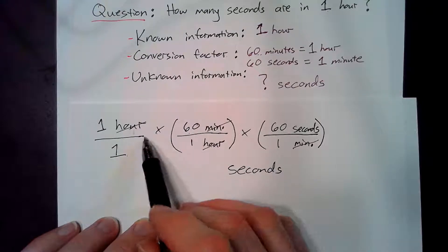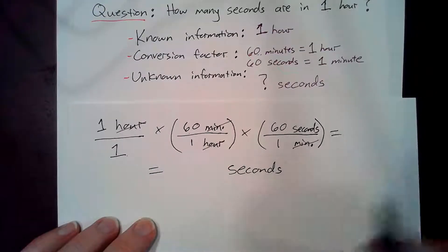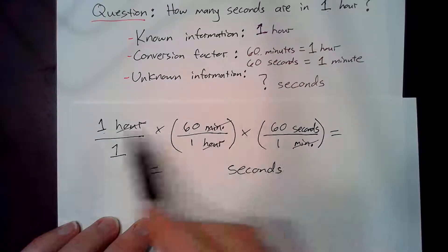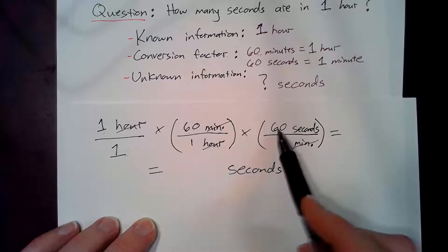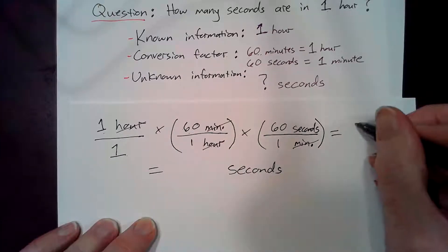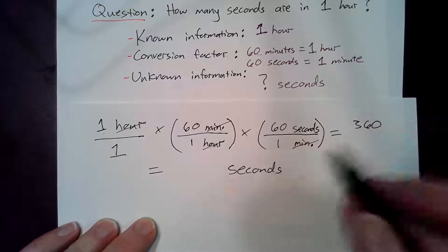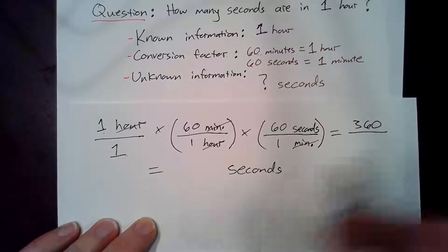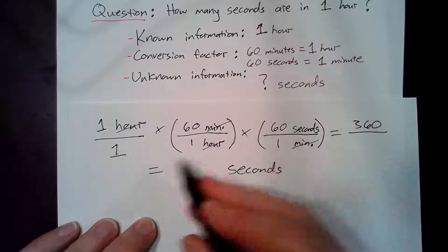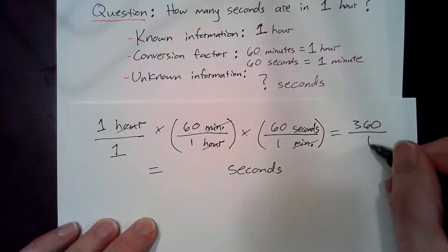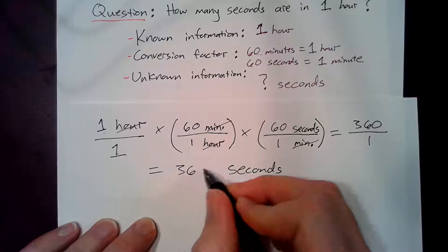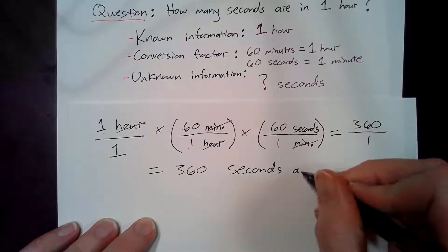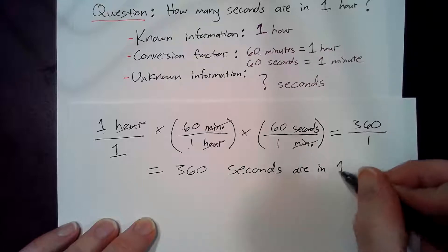Now I need to find the numbers. So I will take the product of what is on top. 1 times 60 times 60. And that will be 360. You take the product of the numerators, or the product of what's on top, and then take the product of what is on bottom. 1 times 1 times 1, which is 1. So I end up with 360 seconds in one hour.